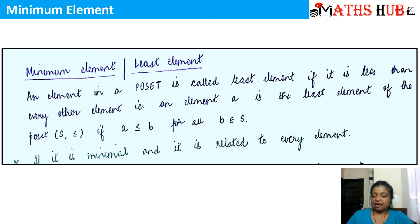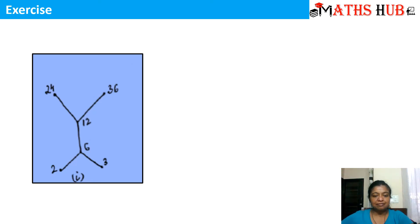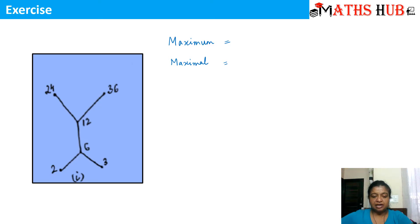You have to take care that if the maximum and the minimum element exist, they are always unique in nature. There cannot be two elements which are maximum or two elements which are minimum. Now since we have done the definitions of maximal, maximum, minimal and minimum, let us see which elements are maximum, which elements are maximal, and similarly which elements are minimum and which elements are minimal.